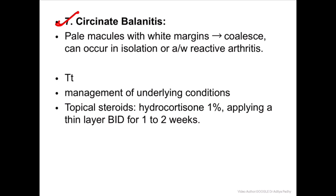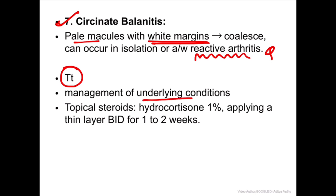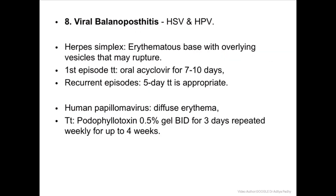Seventh type is circinate balanitis, where pale macules with white margins are present. It may be associated with reactive arthritis. Treatment is addressing the underlying condition and applying topical steroid - hydrocortisone one percent twice daily for one to two weeks.